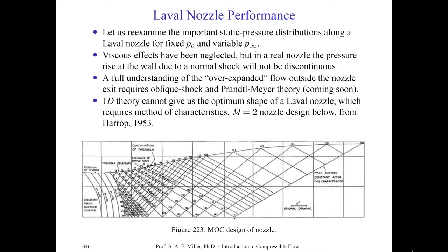This is partly because viscous effects have been neglected. In real nozzles, the pressure will rise at the wall due to normal shocks, which will not be particularly discontinuous as they meet the turbulent boundary layer. A full understanding of over-expanded, under-expanded, or undesigned flows outside the nozzle exit will require oblique shock wave theory and Prandtl-Meyer theory. Our one-dimensional theory cannot give us an optimal shape of a nozzle — it only tells us about area ratios and properties along the centerline as an approximation. What happens to the walls between the exit and throat, where we want to control speed and acceleration, applies to all types of supersonic flow devices.